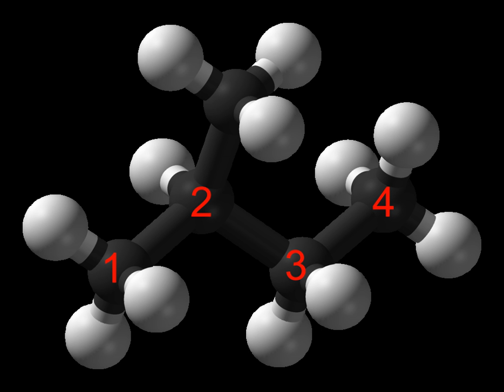Redox reactions of alkanes, in particular with oxygen and the halogens, are possible as the carbon atoms are in a strongly reduced condition. Reaction with oxygen leads to combustion without any smoke, producing carbon dioxide and water. Free radical halogenation reactions occur with halogens, leading to the production of haloalkanes. Alkanes have also been shown to interact with and bind to certain transition metal complexes in C-H bond activation. Free radicals play a large role in most reactions of alkanes, such as cracking and reformation. In highly branched alkanes, steric hindrance can substantially increase the reactivity. Branched alkanes are actually more thermodynamically stable than their linear isomers when branching is not extensive; explanations include electron correlation, destabilization of linear alkanes by steric repulsion, hyperconjugation, and electrostatic effects.